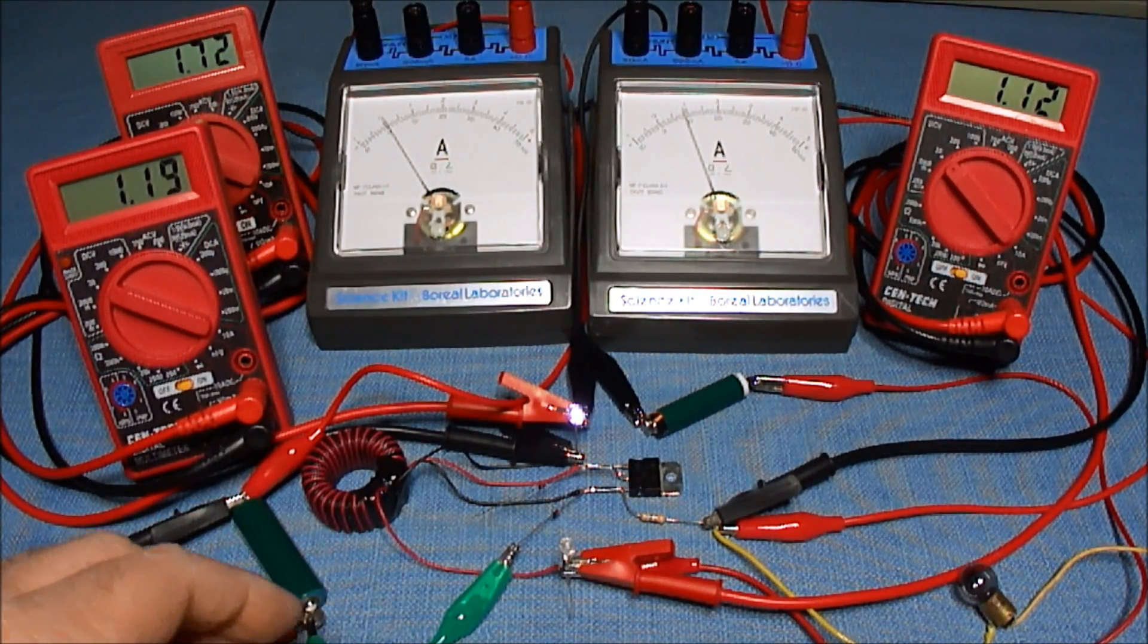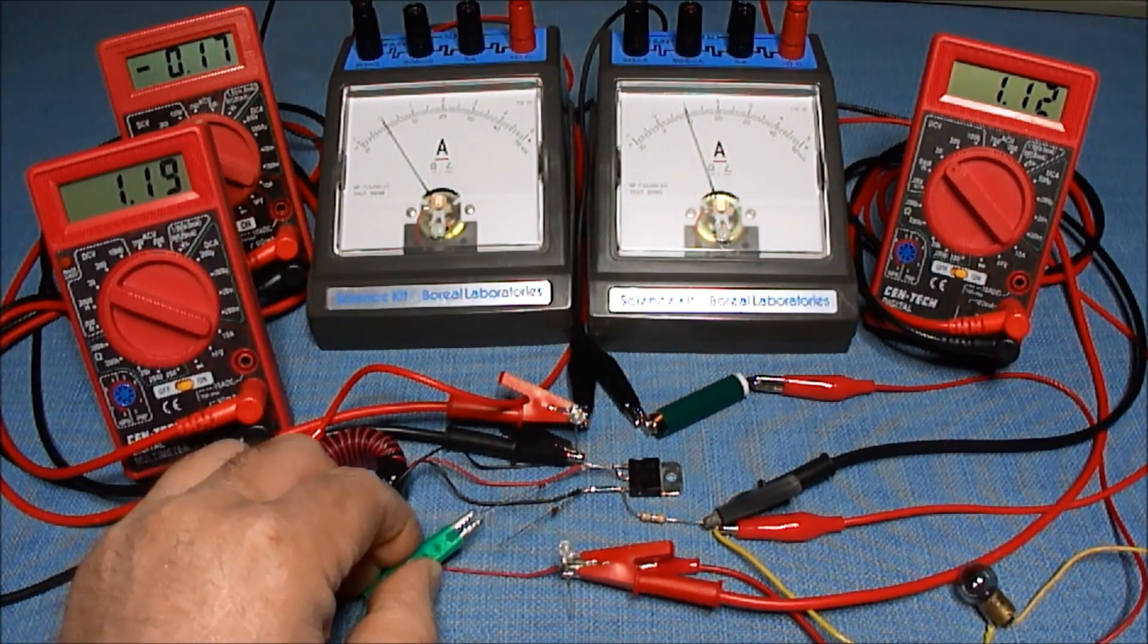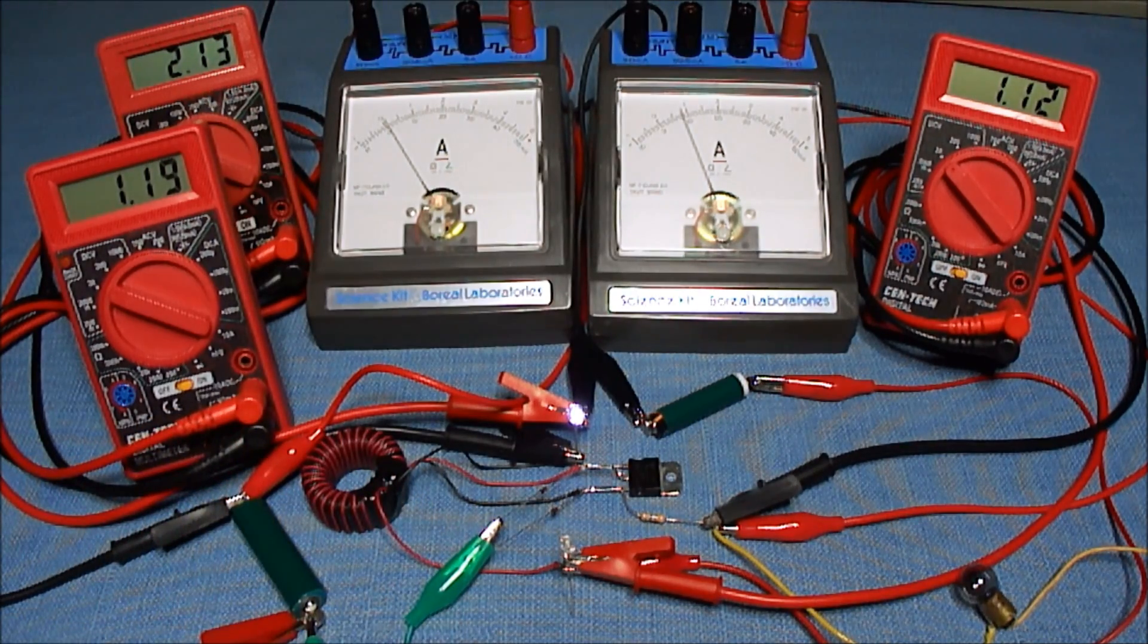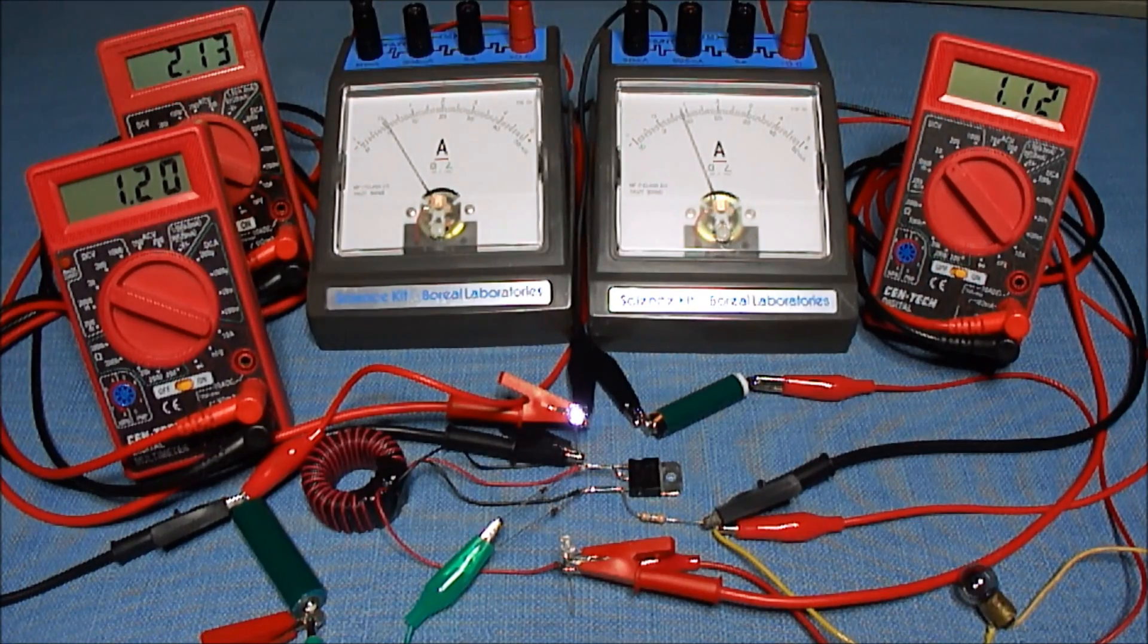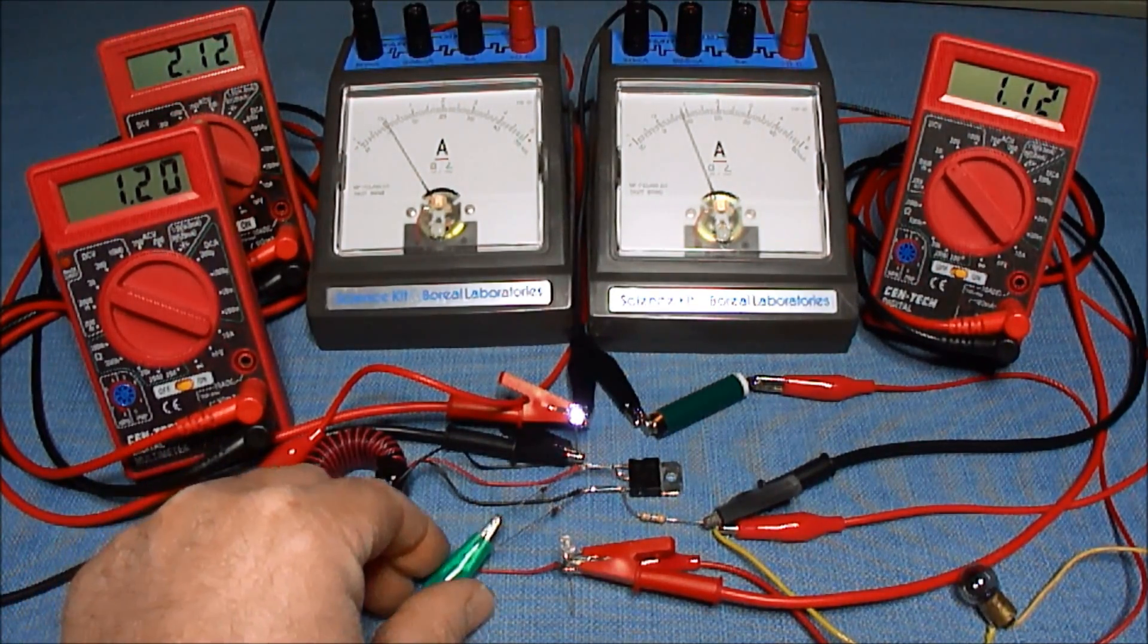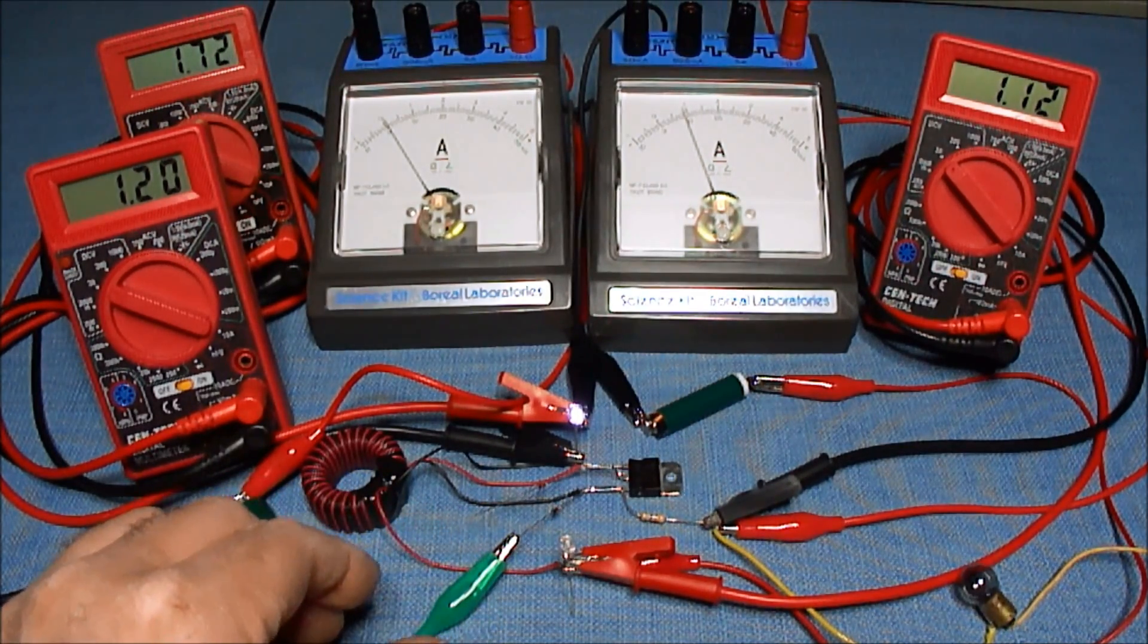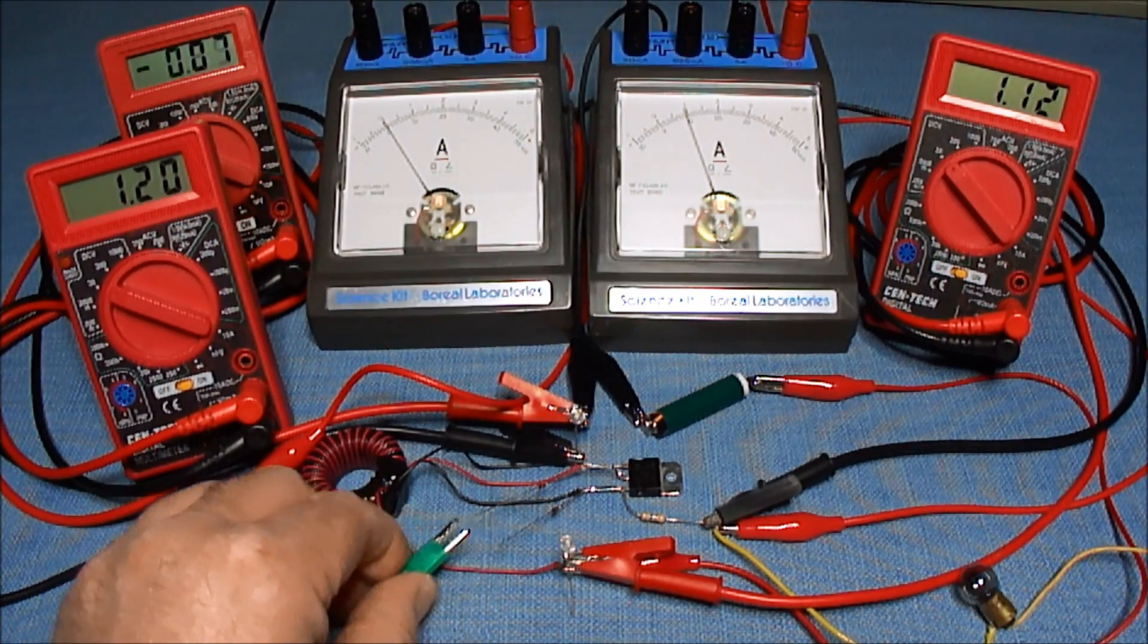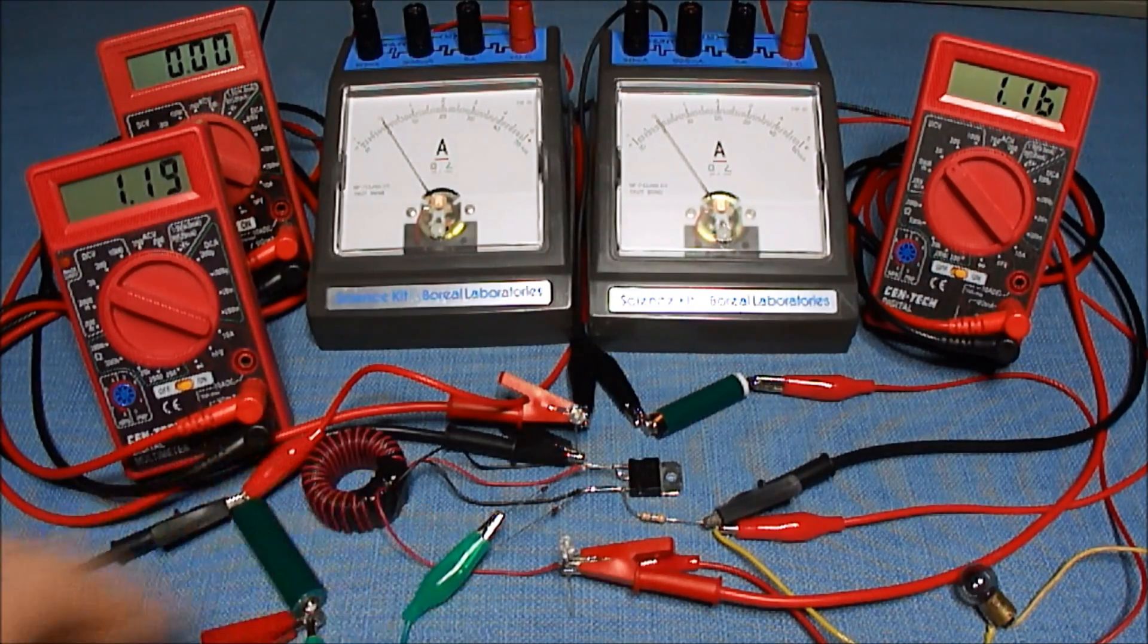Now we'll go to the base to collector, which is version 3. That's 8 milliamps of power in. The base to emitter was 9 milliamps. This version 3.